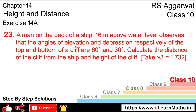He observes the angle of elevation and depression respectively of the top and bottom of a cliff are 60 degrees and 30 degrees. We need to calculate the distance of the cliff from the ship and the height of the cliff.